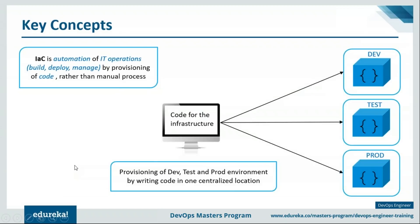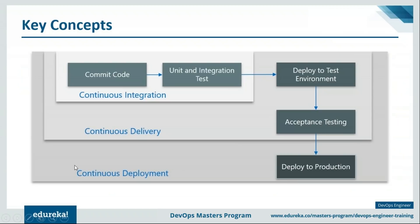Let's discuss continuous integration, delivery, and deployment. When a developer commits a change in the source code, the continuous integration server like Jenkins pulls that code and prepares a build — meaning compiling the source code, validating it, installing certain packages, unit testing, integration testing, static code analysis, and even packaging your application into an executable file.